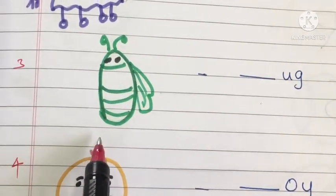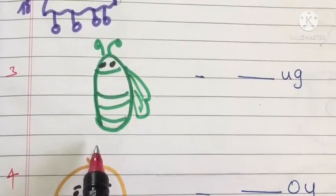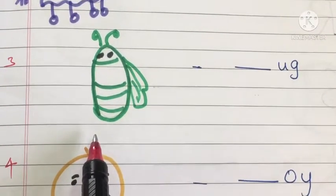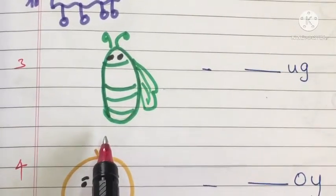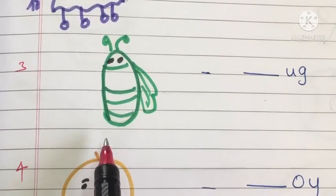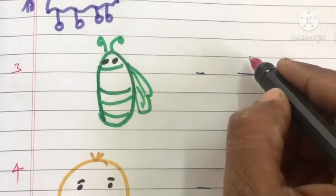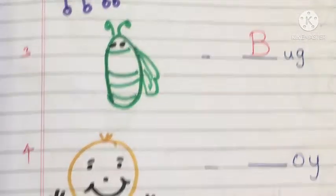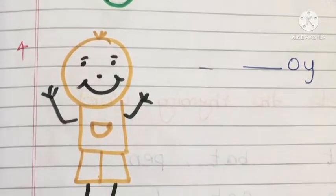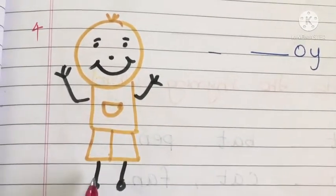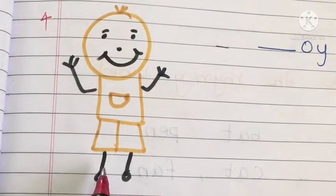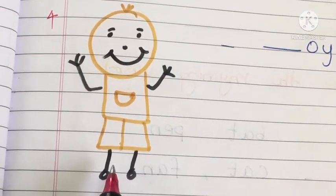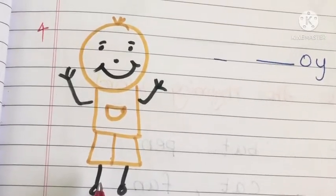See the next picture. What is this? It is a bug. Pronounce it: bug. What is the first letter? What is the phonic sound of the first letter? It is B. That is the letter B. See the next picture: it is a boy. Pronounce the word: boy. What is the first letter? What is the beginning sound? The first letter is B.